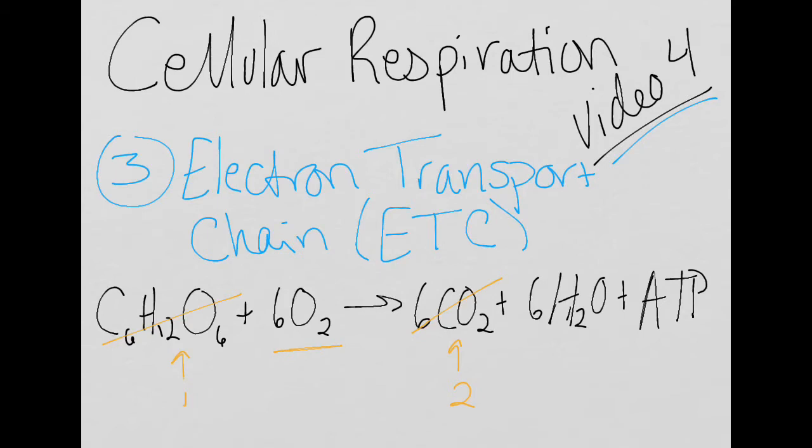Haven't seen any oxygen being made. Haven't seen any water being made. And we have made ATP in both steps one and two, but we're actually not done making all of our ATP. So in the electron transport chain, we're going to see oxygen being used, we're going to be seeing water being made, and we're still going to be seeing more ATP.